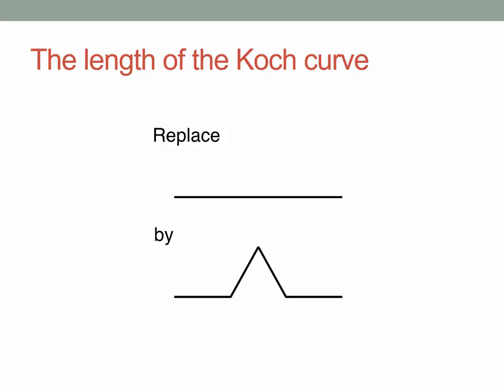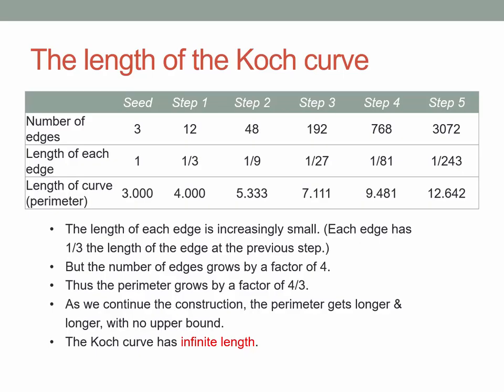What we're doing at every stage is taking an edge of some length and replacing it by four shorter edges, each one-third the length of the replaced edge — but there are four of them. So each edge length is being replaced by something with length four-thirds. That means at each step we're multiplying the length of the curve by the factor four-thirds. What we get is, in fact, a geometric sequence. The length of the curve starts at three, we multiply by four-thirds to get four, multiply by four-thirds again to get 5.333, and so on.